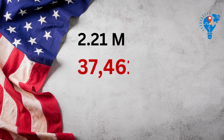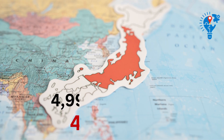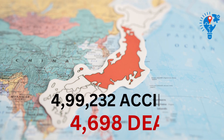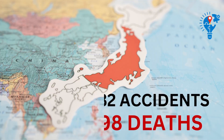In developed countries like America and Japan, there are more road accidents compared to India, but deaths are less. For example, in 2018, the US recorded 2.21 million accidents but only 37,461 deaths. Similarly, Japan recorded 4,99,232 road accidents with only 4,698 deaths.